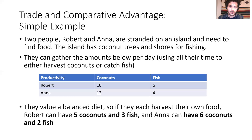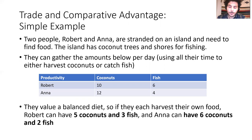Let's see a simple example before we get to the full model. This is one of the secrets of trade theory—we take simple economic principles that apply to people and apply them at the level of countries. This example has two people, Robert and Anna, stranded on an island needing to feed themselves. The island has two food options: coconut trees and fishing. They're not working together right now—it's every man for themselves.